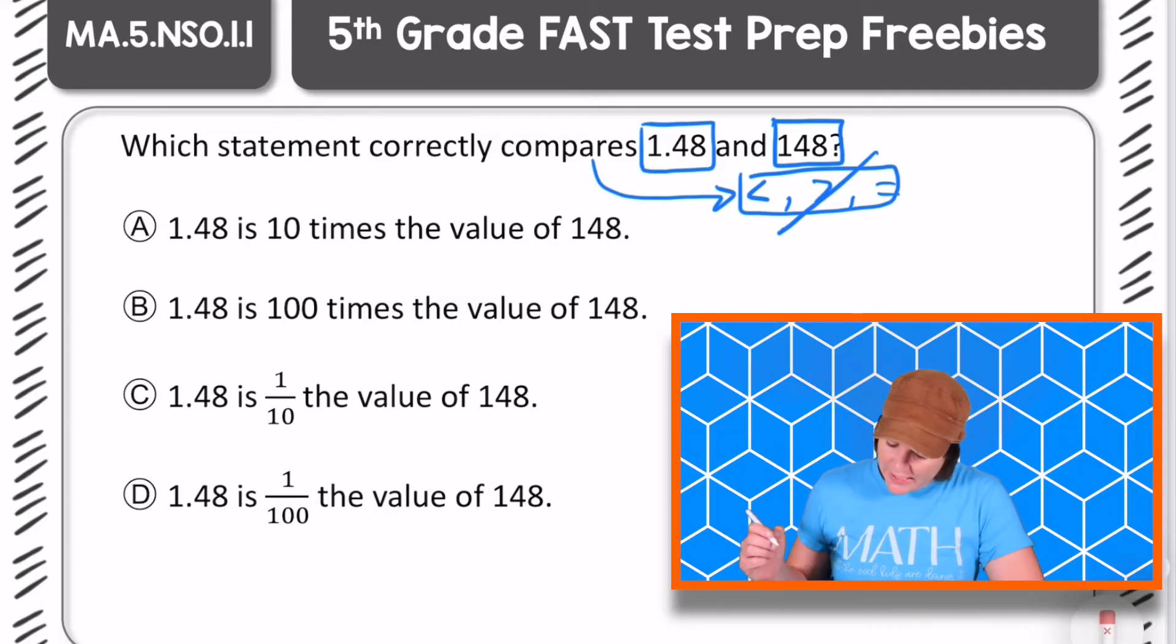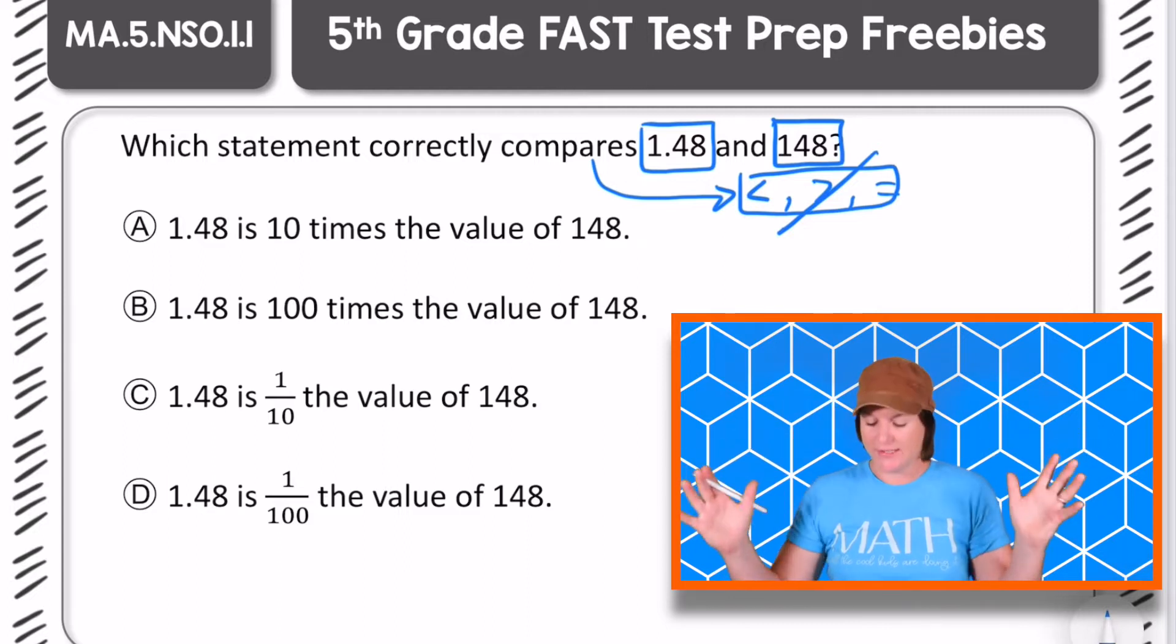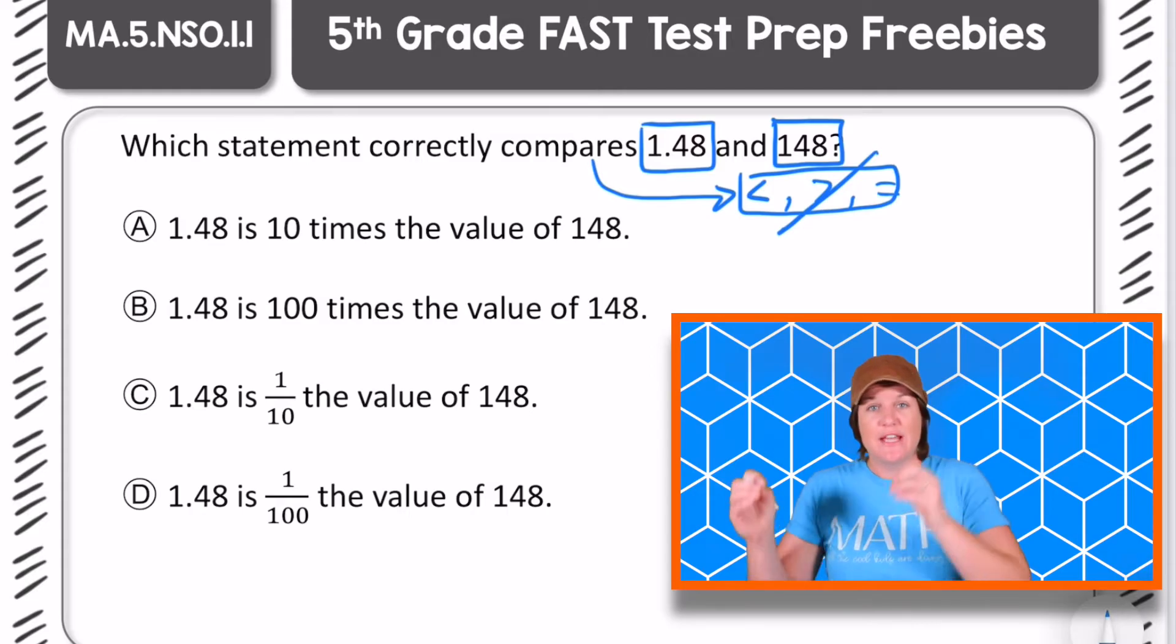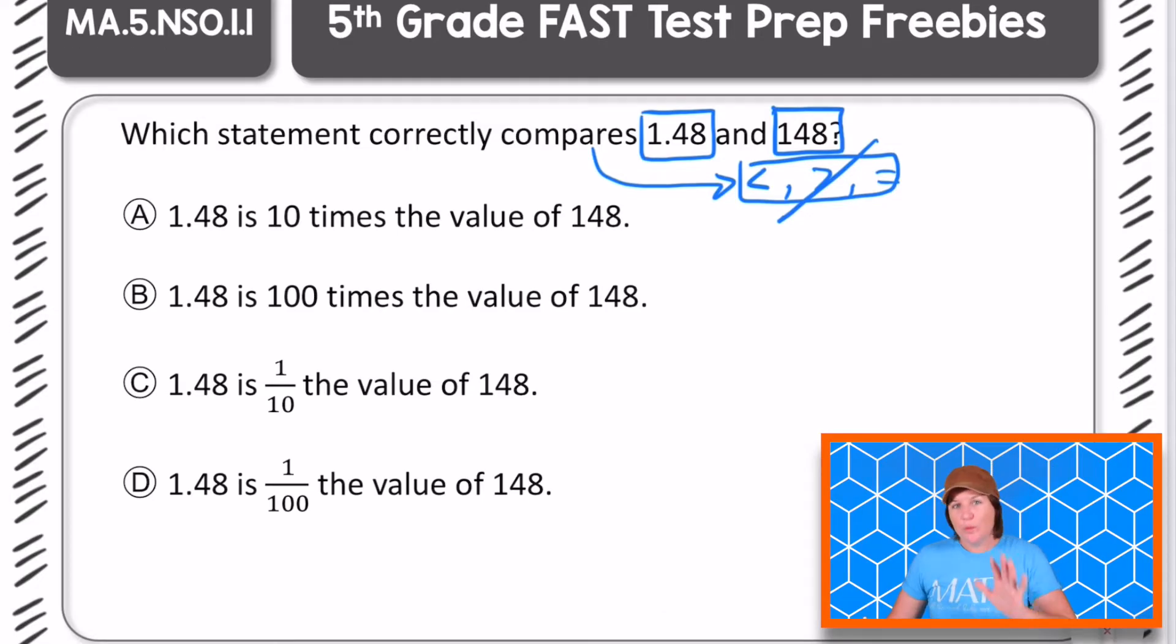So for A, I see that 1.48 is 10 times the value of 148. That's a lot for my brain to consider, but I see that what I'm trying to do is I'm jumping through place values, trying to see how the digits have been either increased or decreased in their place value. This would be easier if I quickly create a place value chart.